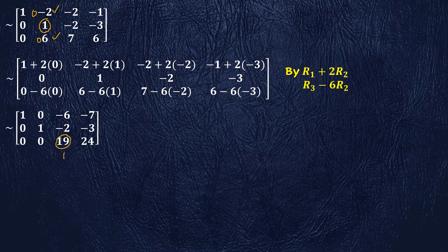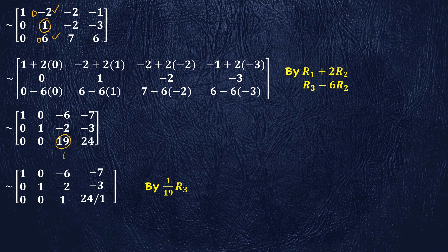Now we need 1 instead of 19, which is the first non-zero element in row 3. To make this 19 into 1, we divide row 3 by 19. By performing this row operation we are left with this transformed augmented matrix.